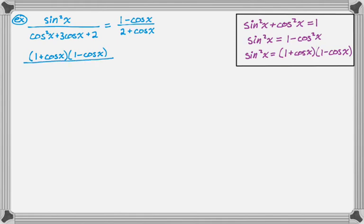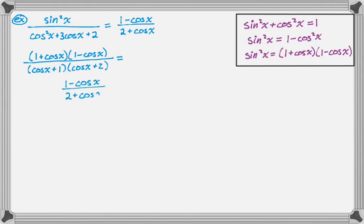Then that's all over the denominator, which I can factor. It's a trinomial where cosine is kind of the variable — it's like u² + 3u + 2 — so I'm going to factor that into (cosine + 1)(cosine + 2). If you look, you have (1 + cosine) over (cosine + 1); those are obviously the same, so I can cancel those. I'm left with (1 − cosine) over (2 + cosine), which is the original right-hand side. So factoring got us through this one as well.